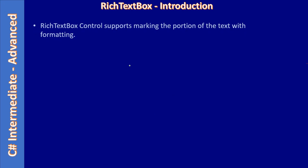The rich text box control supports marking a portion of text with formatting. For example, in your rich text box control there is some text, and each line — you can assume it as a word — you can select one or more words and apply formatting. That's the purpose of the rich text box control.